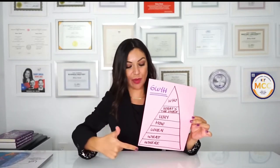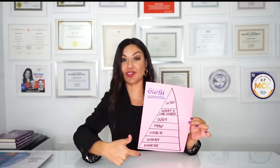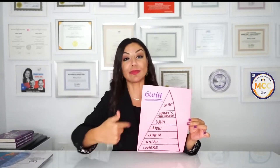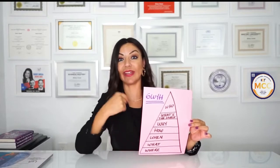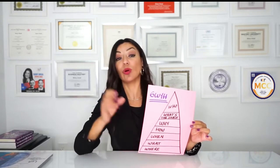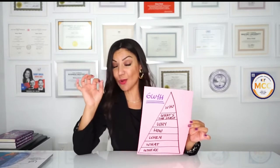6W1H. As you see, this triangle has all the 6 W's and 1 H. The H is about 'how.' So: where, what, when, how, why, what is the source, and who.